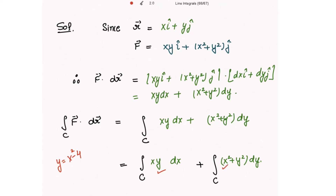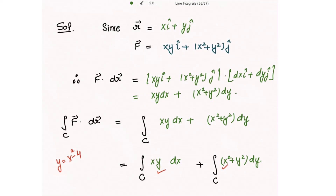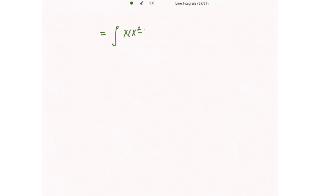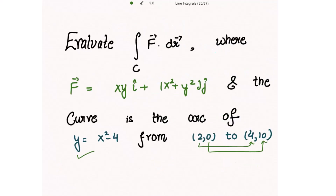From y = x² - 4, we get x² = y + 4. Substituting into the first integral, we get the integral of x(x² - 4) dx, where x varies from 2 to 4.